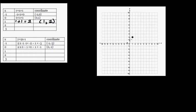One comma two is this point, and zero comma one is this point. You will find all the points are on a straight line. When X is two, it is two plus one which is three, so when X is two, Y is three. The first number in a coordinate is always along or across, and the second number tells you whether you go up or down. So you go two across from the origin and three up.